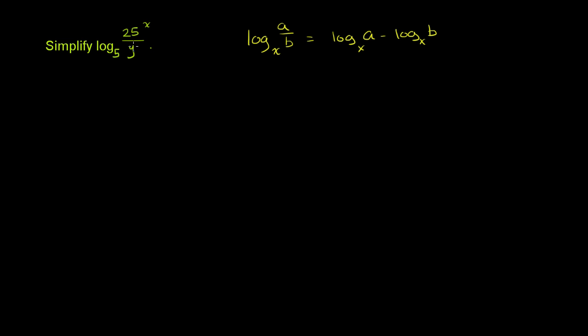And here we have 25 to the x over y. So we can simplify. So let me write this down. I'll do this in blue. Log base 5 of 25 to the x over y, using this property, means that it's the same thing as log base 5 of 25 to the x power minus log base 5 of y.